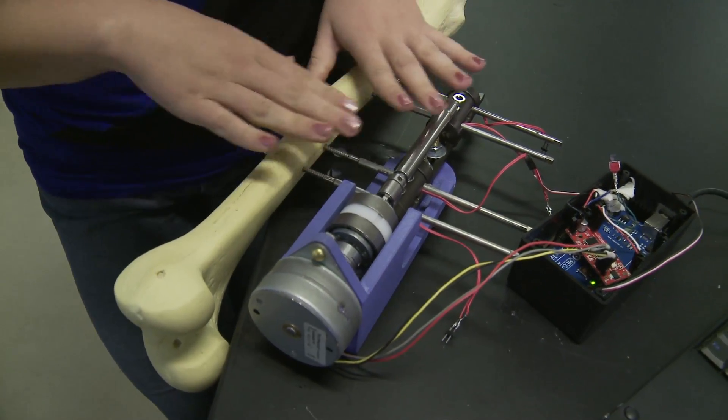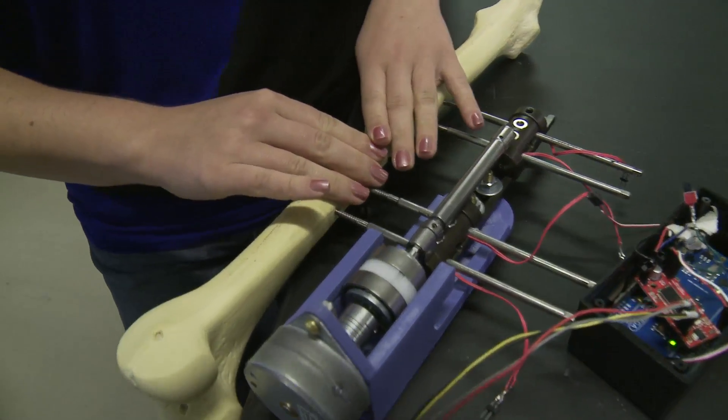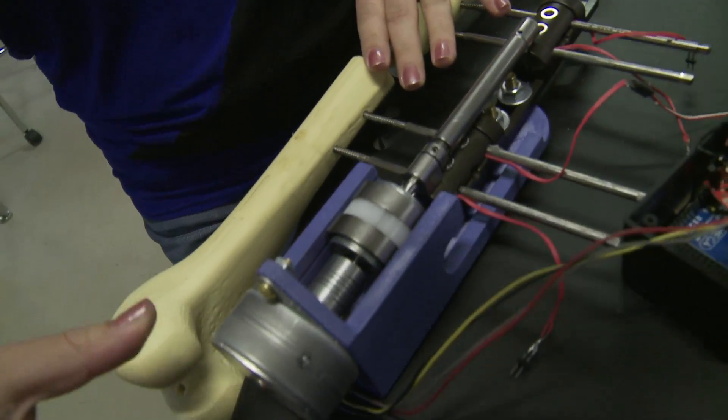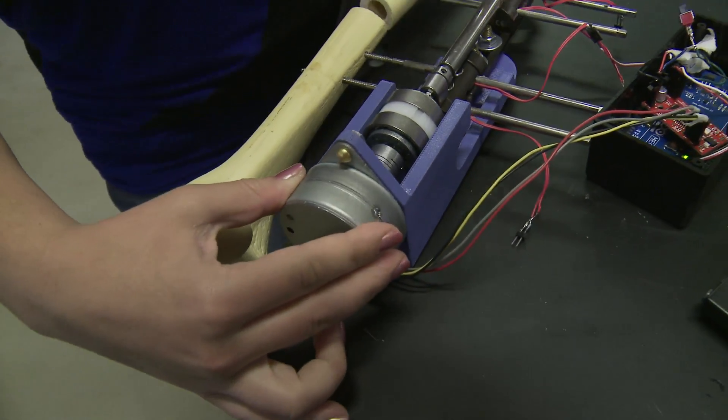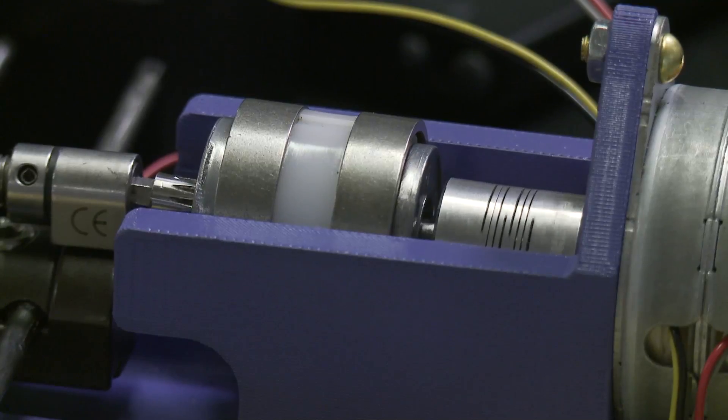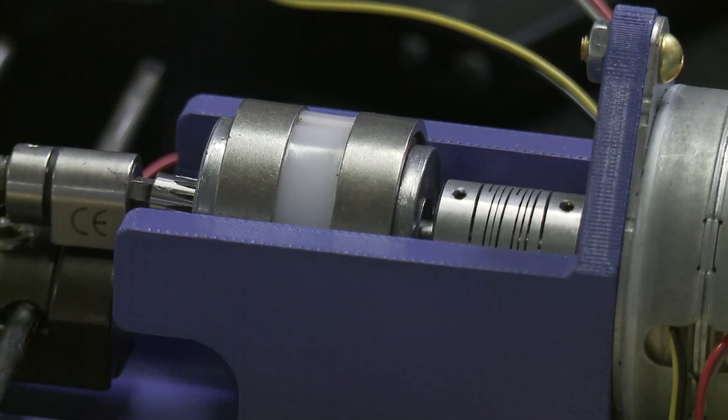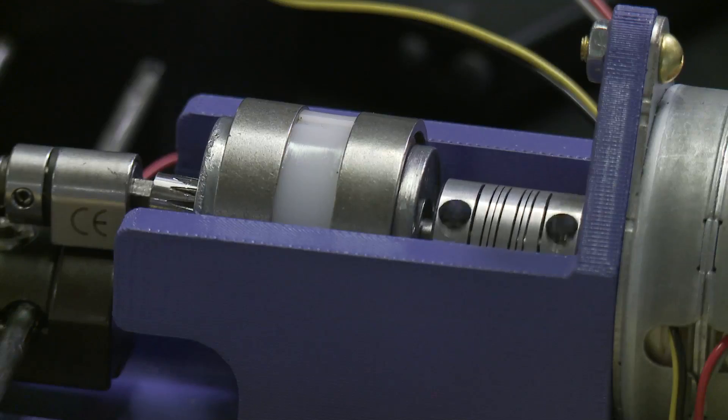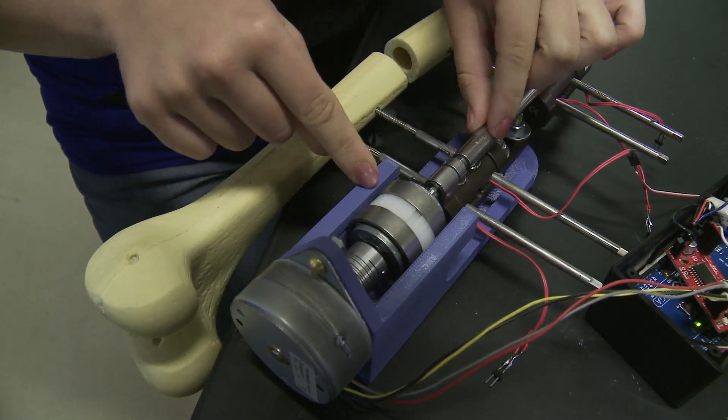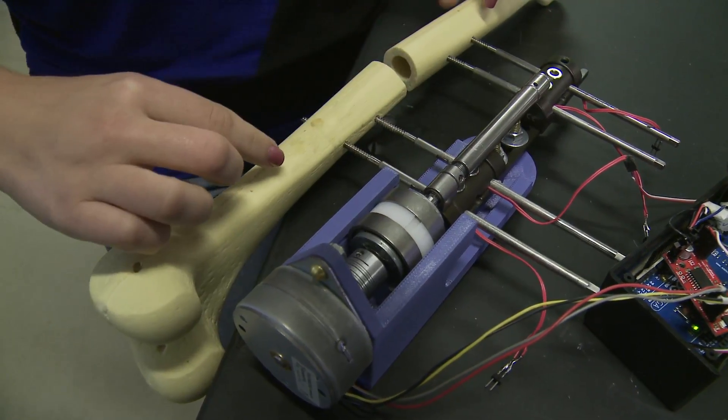So what we have here is the original device mounted on the bone and then we've added this part here. This is a motor which, when turned on, you can see now it's turning. So instead of using your hand and a wrench to open this up and stretch the bone, the motor is now doing that automatically.